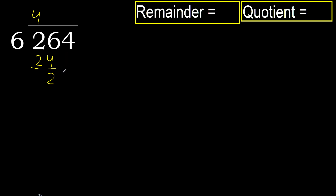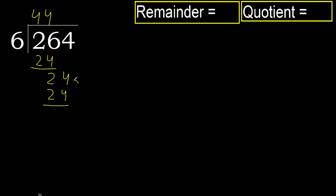Next. 6 multiplied by 4 is 24. 24 is not greater. 24 minus 24 is 0. Next — there is no number, therefore finish.